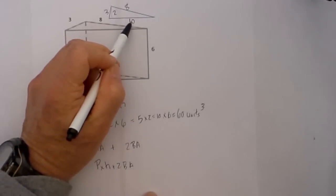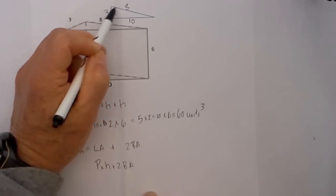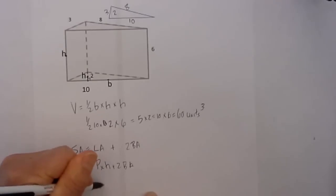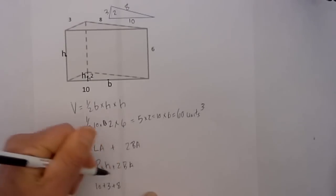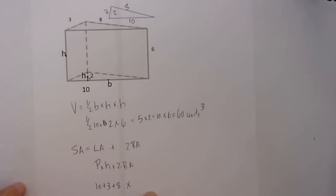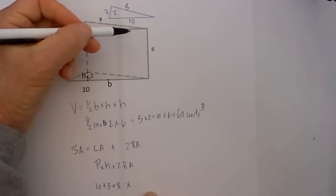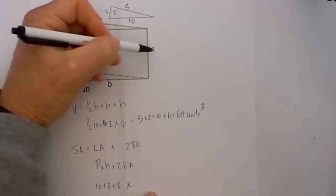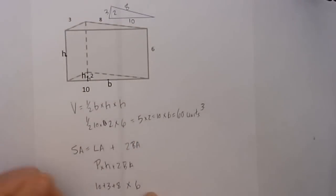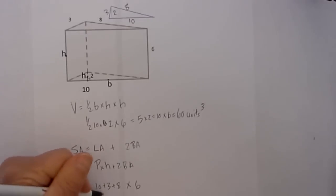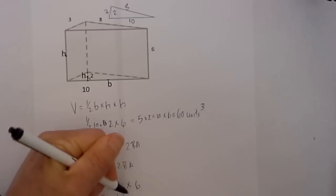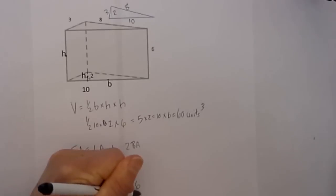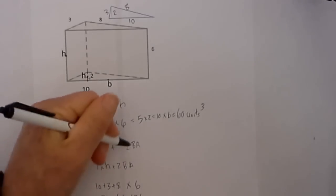The perimeter of the triangle is 10 plus 3 plus 8, times the height of the prism — which is the distance between the two bases — which is 6. So 10 plus 3 plus 8 is 21, times 6, which is equal to 126. So that is our lateral area.